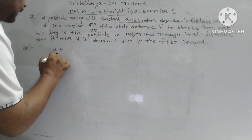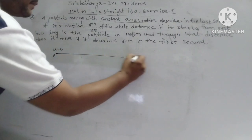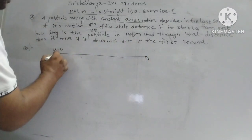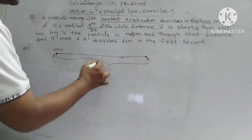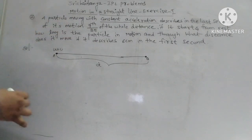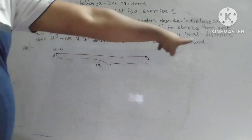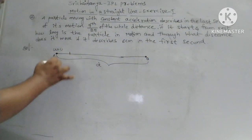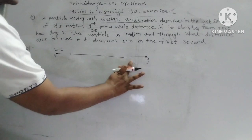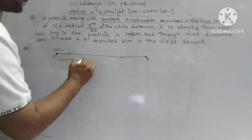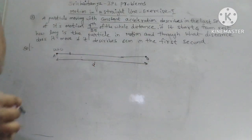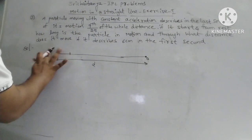Now let us find how long the particle is moving with constant acceleration. Let us assume the total distance is D. This is 6 centimeters in the first second. Total distance is D. In the first second, it covers 6 centimeters distance.